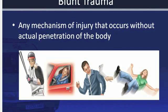Blunt trauma is any mechanism of injury that occurs without actual penetration of the body. Examples include motor vehicle collisions, falls, sports injuries, and assaults with blunt objects such as a baseball bat or, in this picture's case, a tire iron. Blunt trauma produces injury first to the body surface and then to the body's contents, resulting in compression and/or stretching of the tissue beneath the skin. The amount of energy depends on the length of time of compression, the force of compression, and the area compressed.